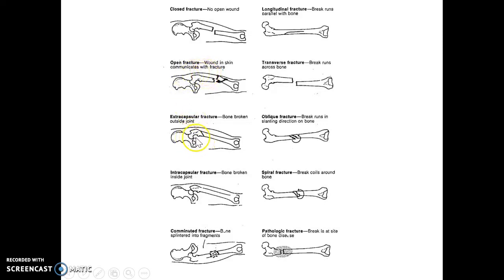Extracapsular means outside of a joint, and intracapsular means inside of a joint — that looks like it's somewhere here in the hip. Comminuted means there are little bone fragments that they've got to deal with.